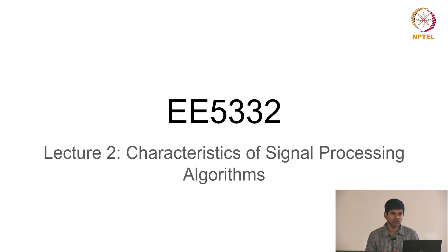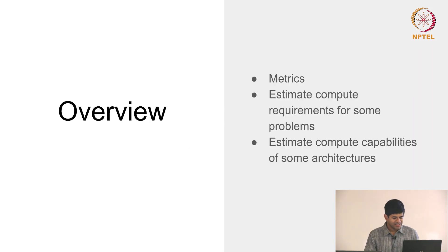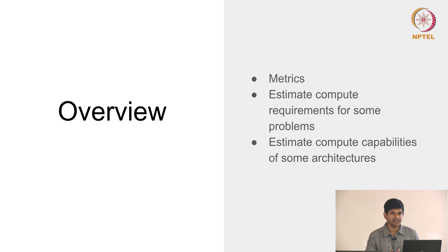All of those are relevant and important questions when you are trying to come up with a useful mapping of a given algorithm to whatever architecture you have available. We will start by defining a few metrics — some numbers that are typically mentioned when we talk about how effective a computation is or what kind of compute requirements there are. Then we look at three different problems and very approximately try to estimate their computational requirements, after which we will look at a few different architectures and try to estimate their computational capabilities.